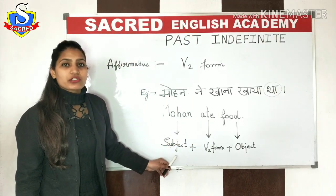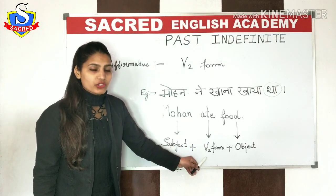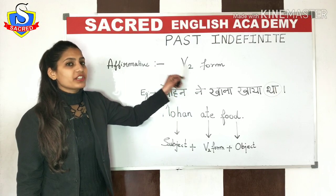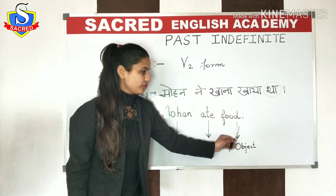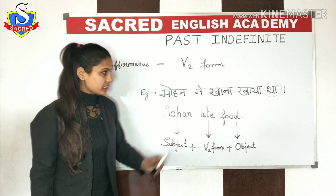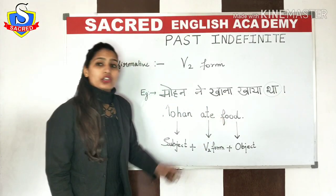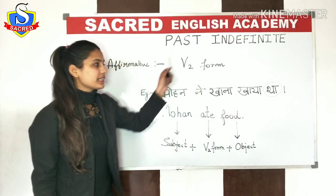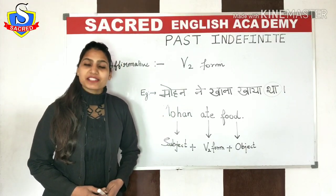Mohan is the subject — the one who is performing the action. 'Ate' is the second form of the verb, as you have to use the second form in Past Indefinite simple sentences. Then comes the object, which is 'food.' I am repeating: 'Mohan ne khana khaya tha' — 'Mohan ate food.' This is how, with the help of this rule, you can make the sentence in a very easy manner. This is all about the simple sentence of Past Indefinite.